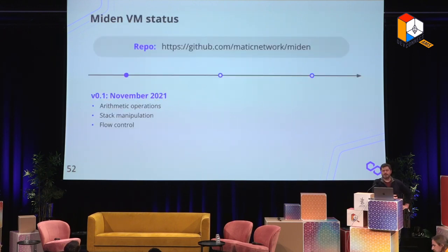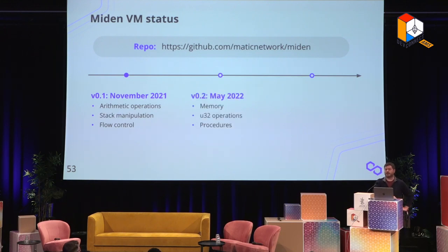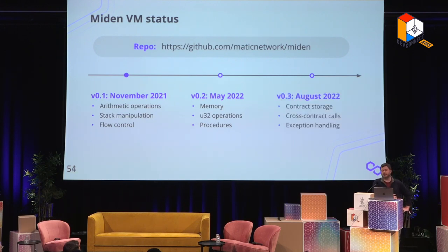To wrap up, here's our current status. Version 0.1 was released with basic features back in November. We're almost done with v0.2, which will provide random access memory, 32-bit integer operations, and procedures. By hopefully before end of summer, we'll have cross-contract calls, storage, and ambitiously maybe exception handling like reverts. At that point the VM will be powerful enough to actually start building a rollup around it.